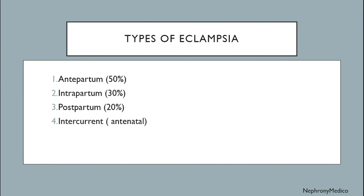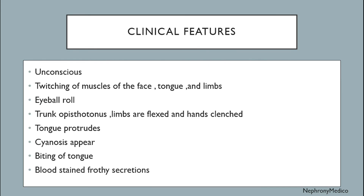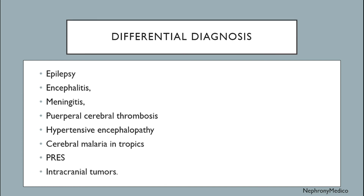Types of eclampsia: antepartum, intrapartum, postpartum, and intercurrent or antenatal. Clinical features include unconsciousness, twitching of muscles of the face, tongue and limbs, eyeball rolling, trunk opisthotonos, limbs are flexed and hands clenched, tongue protrudes, and biting of the tongue with blood-stained secretions.